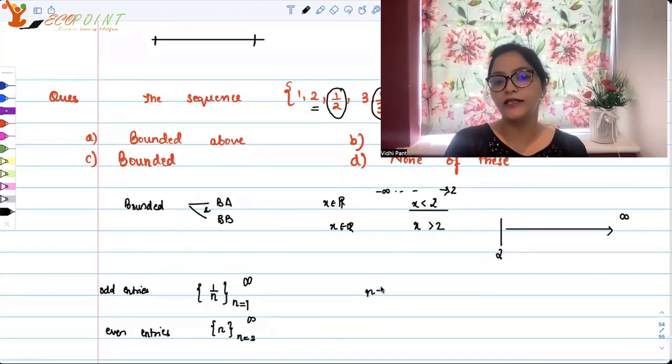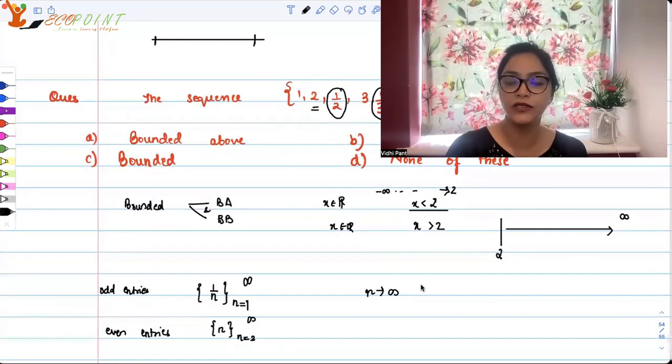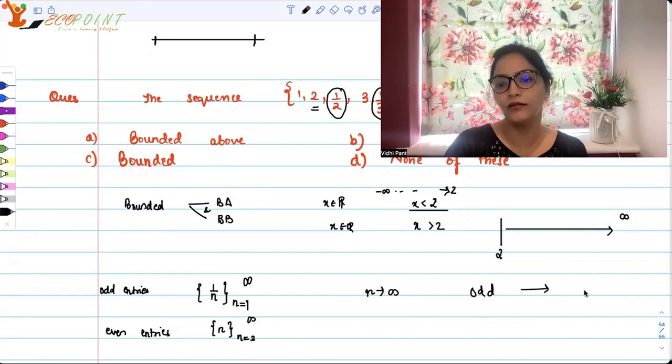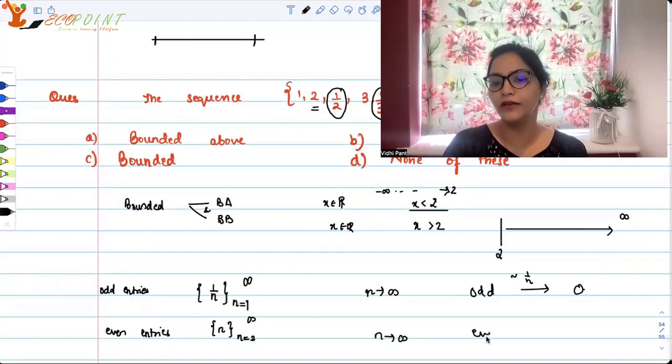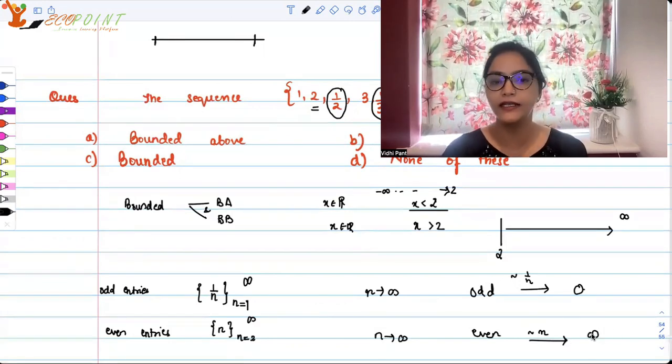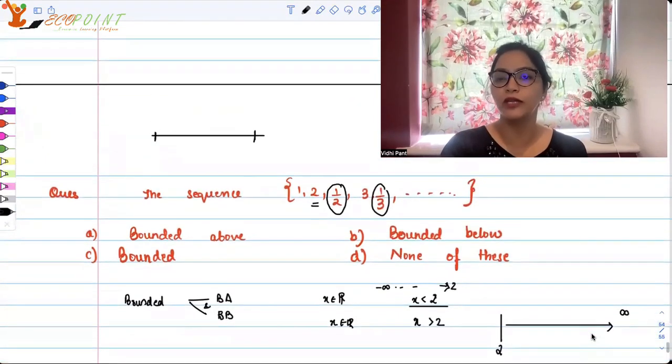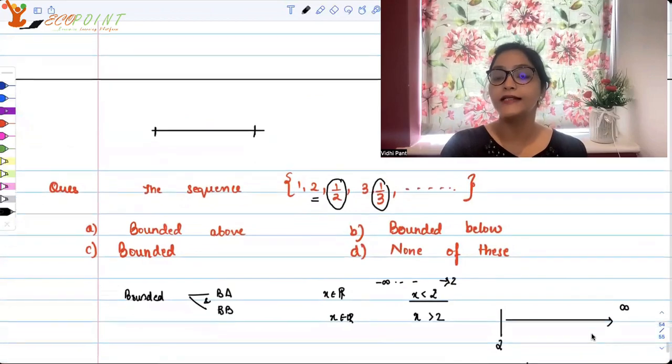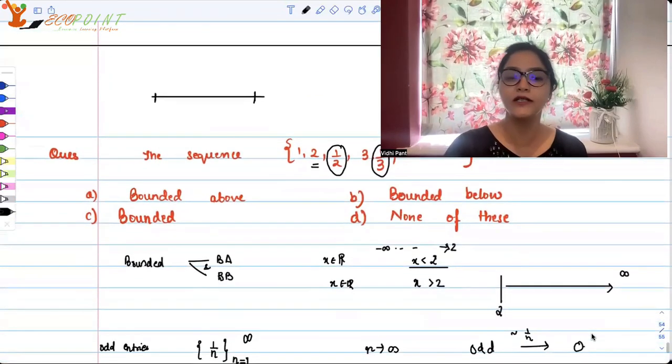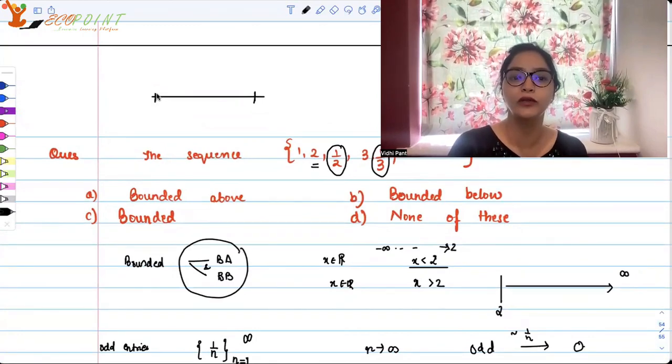So what do you observe here? As n would keep on increasing, n would go to infinity. As n keeps increasing, what's going to happen is that your odd entries will be tending towards zero because it would become one by infinity. And as n goes to infinity, your even entries, because they are like n, it would just go to infinity. What is it telling you? It is telling you that at the upper level, there is no boundary to it. It is going up till infinity. Infinity is the biggest, but we don't know where to put that wall. So it's not stopping anywhere. It is not bounded above. That means it's not bounded because when it is bounded, it is both bounded above as well as bounded below. You need to have both the walls.